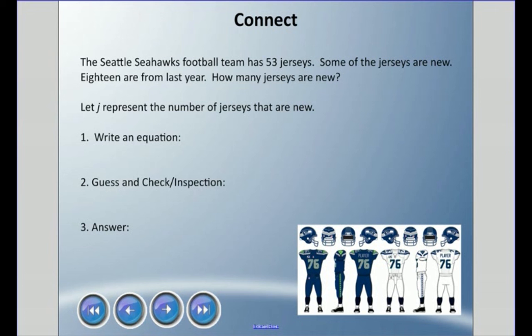Okay, so the first thing we need to do is write an equation. We know they have 53 jerseys, so that is the total number, so I can say 53 equals. We know some of them are new, we don't know what that is, so let's say j right there. And we know some are from last year, and that was 18. So an equation could be 53 equals j plus 18. There, we could have said 53 equals 18 plus j. You could use a subtraction equation here, but let's just go with this one.